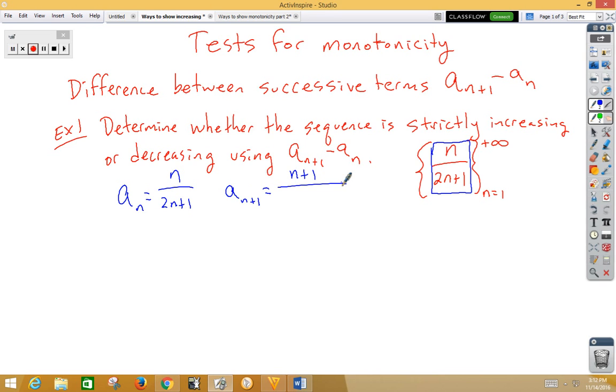So we have n plus 1 on the top. We have 2 times n plus 1 plus 1 on the bottom. Notice how important it is to put parentheses there because we are going to have to distribute this 2. So we end up with n plus 1 over 2n plus 3 as our a sub n plus 1.